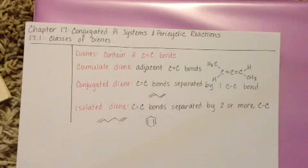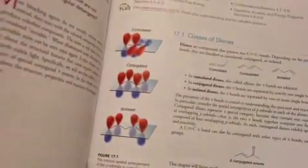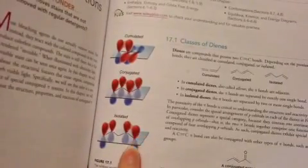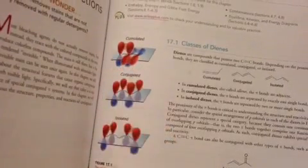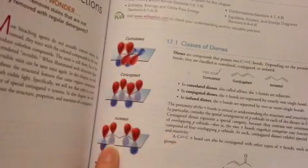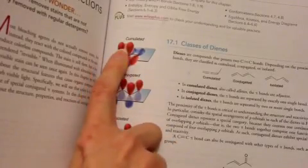One of the things that is going to come up in the next section, 17.2, is the configuration of the pi orbitals in these three different types of alkenes. And you have a figure in your textbook, 17.1, which is on page 769. And here they're showing the pi orbitals of the alkenes in the three different types of dienes.